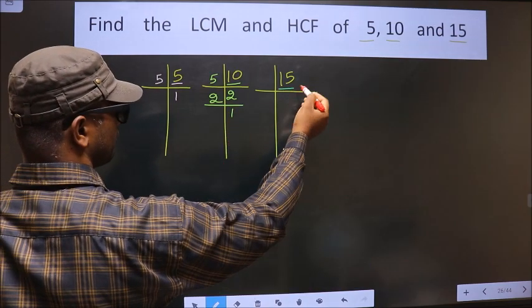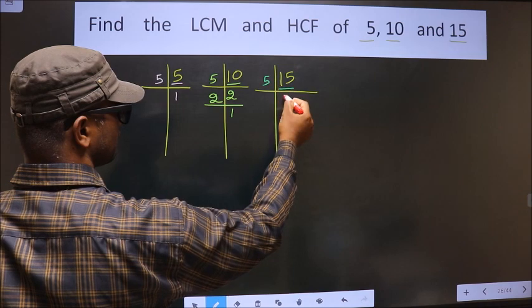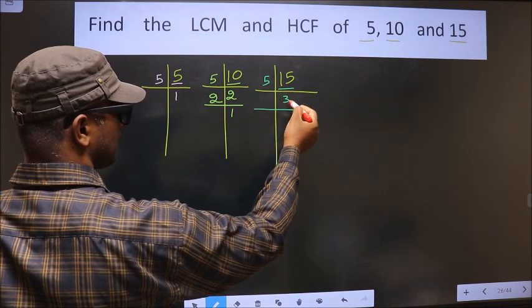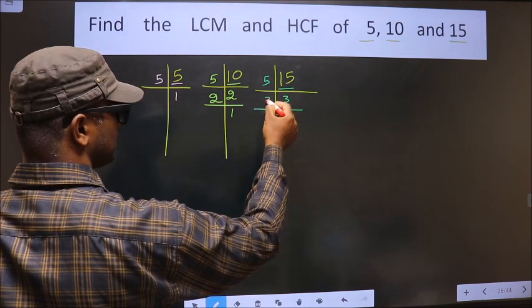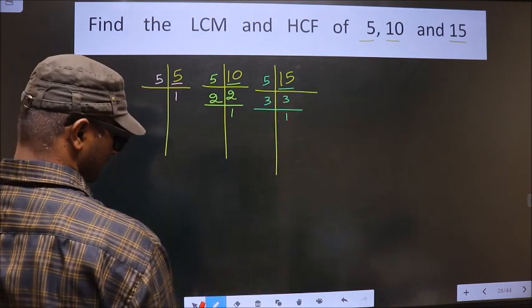Here we have 15. 15 is 5 times 3. Now, 3 is a prime number, so we take 3 once — just 3.